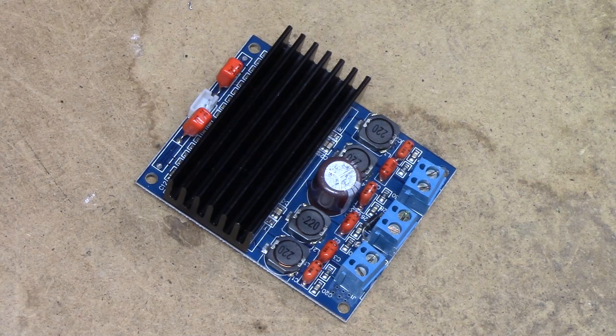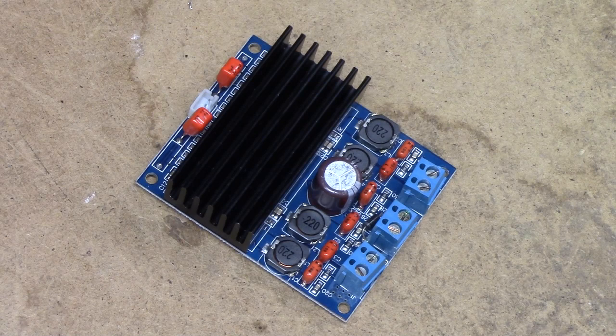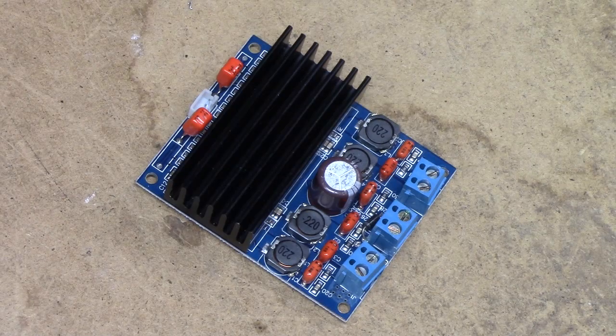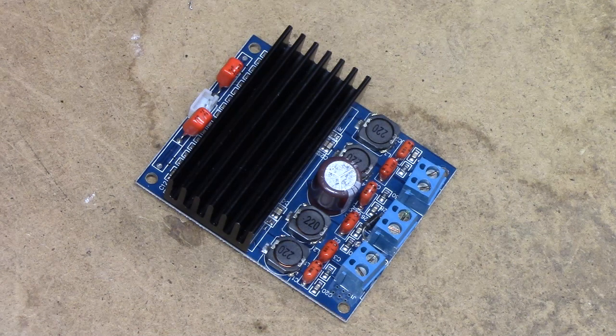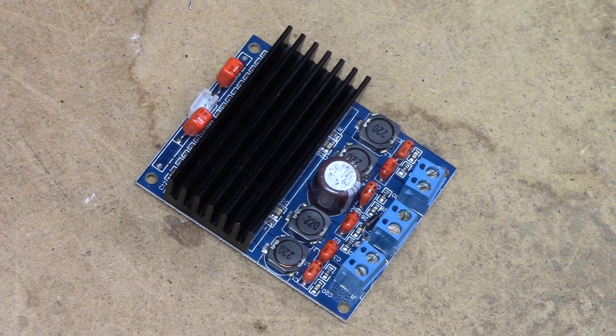What you were looking at there was the output of this TDA7492 based Class D amplifier board which goes under the glamorous name of SKU145225 on banggood.com.